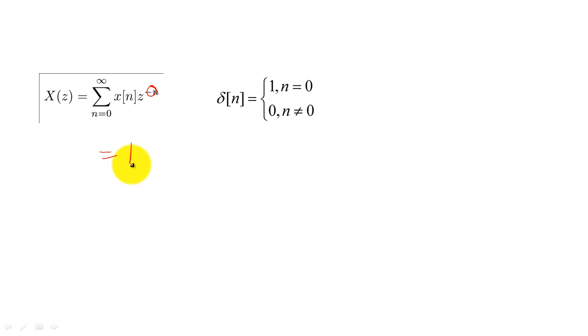The Z-Transform of the unit pulse is simply 1. If we delay the unit pulse, we simply change the exponent of Z.